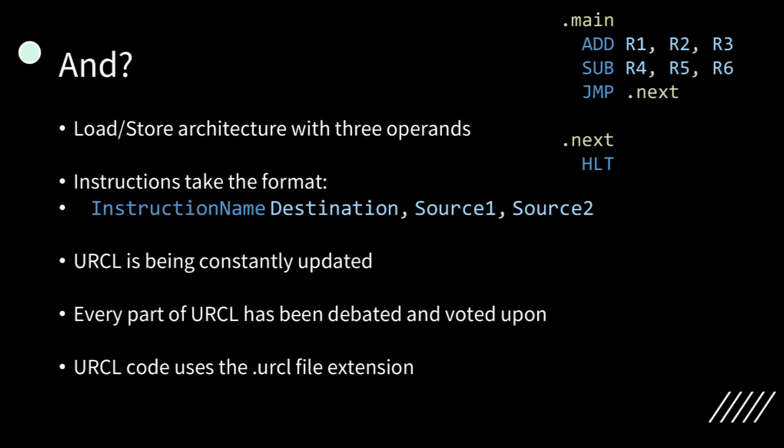What this means is if you have the same instruction in a different context, that same instruction will do the exact same thing. This means each URCL instruction can be easily and directly translated into most ISAs by translating each instruction one at a time to the target CPU's ISA. URCL uses a load-store architecture with three operands. Instructions typically take the format of first having the instruction name, followed by the destination operand, then the source operands.